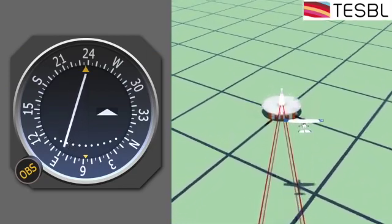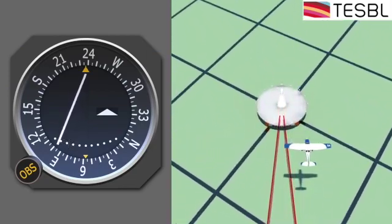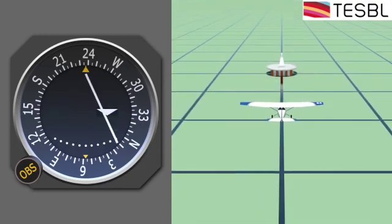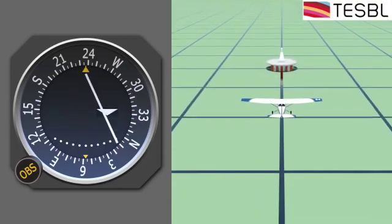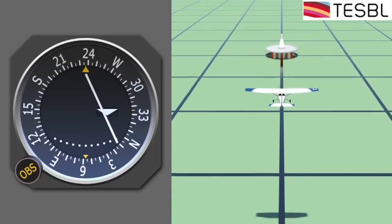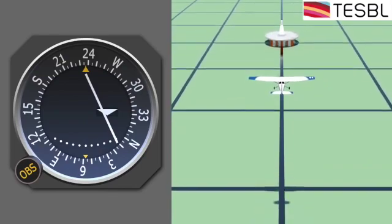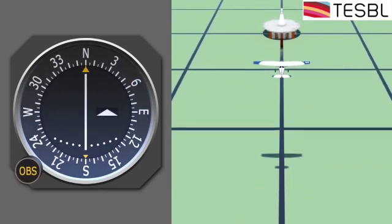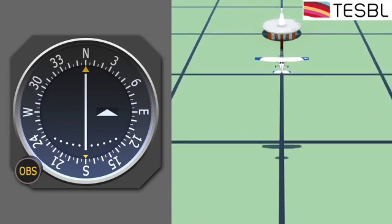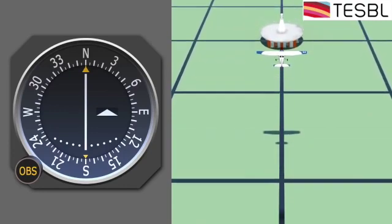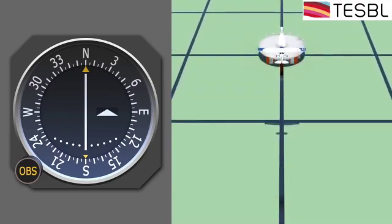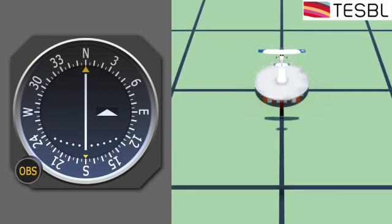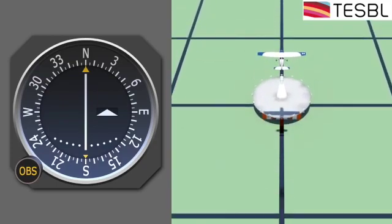VOR radials emit out like spokes on a bicycle. The closer the pilot flies to the VOR, the more sensitive the instrument gets. Let's say we are south of the VOR on the 180 radial flying northbound. We set the OBS to 360 degrees and get a 'to' indication. The closer we get to the station, the more sensitive the needle gets, but the indication will continue to show 'to'.